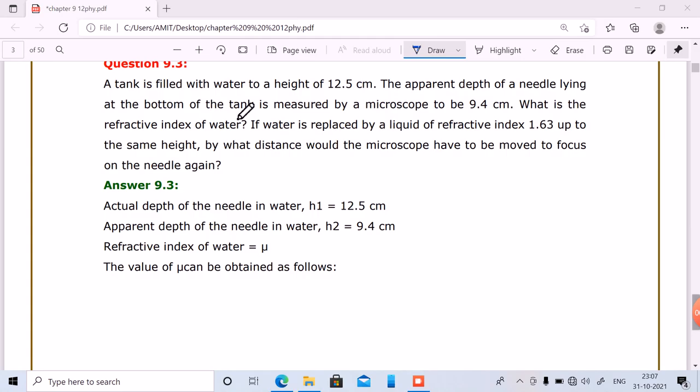Question number 9.2: A tank is filled with water to a height of 12.5 centimeter. The apparent depth of a needle lying at the bottom of the tank is measured by a microscope to be 9.4 centimeter. What is the refractive index of water?